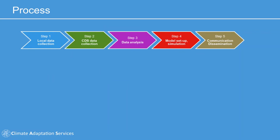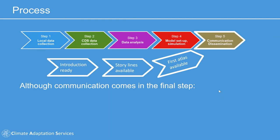For you as knowledge purveyors, many of the data process steps will look sort of similar, and if you follow these, they typically start with local data collection and end with communication and dissemination. With the interactive atlas, we're mainly in the last step. We need to have an introduction ready, we can develop and build storylines, and get an idea of what data we can expect in a later stage. We can start working on that and make first versions even before finalized data is available.